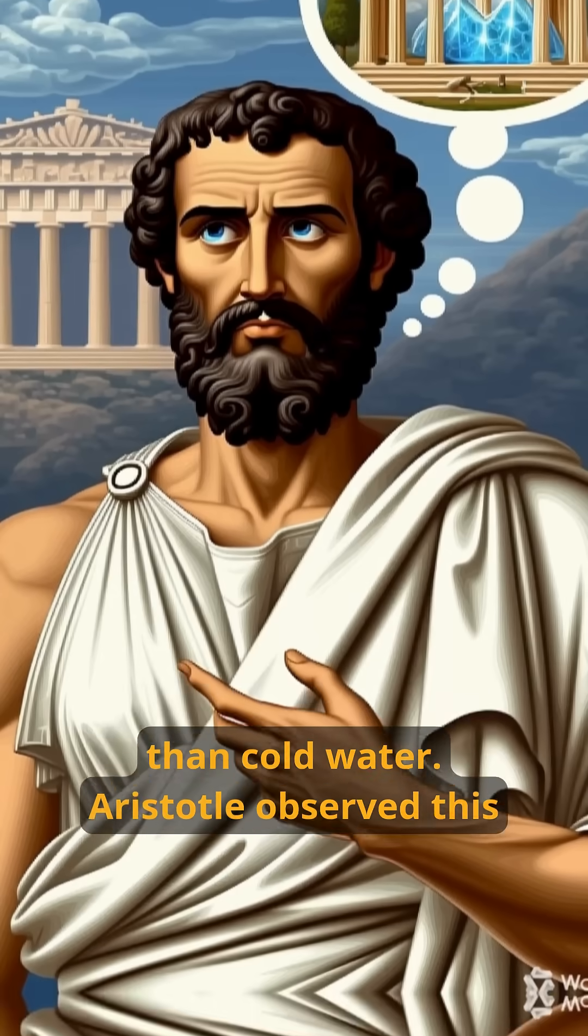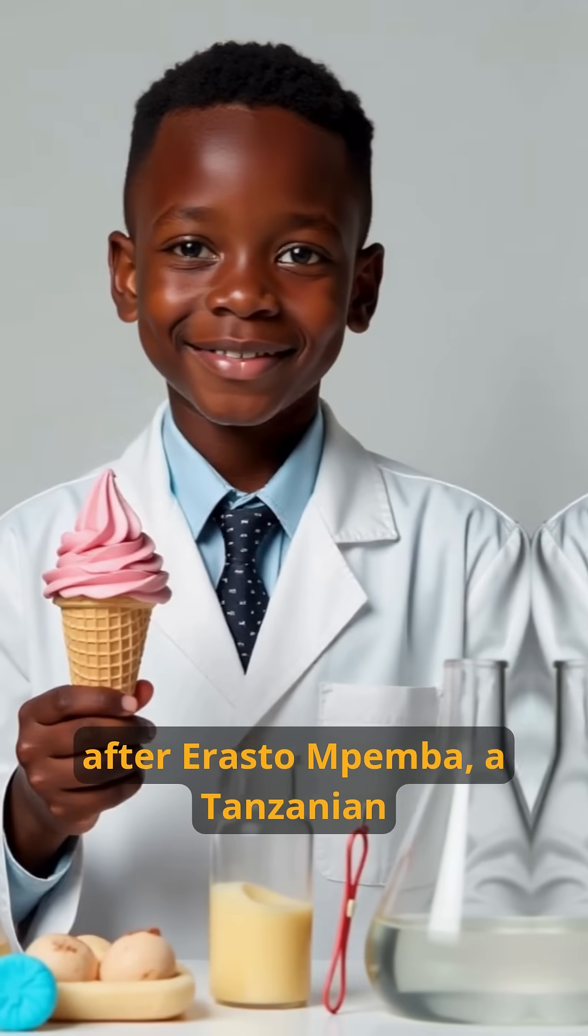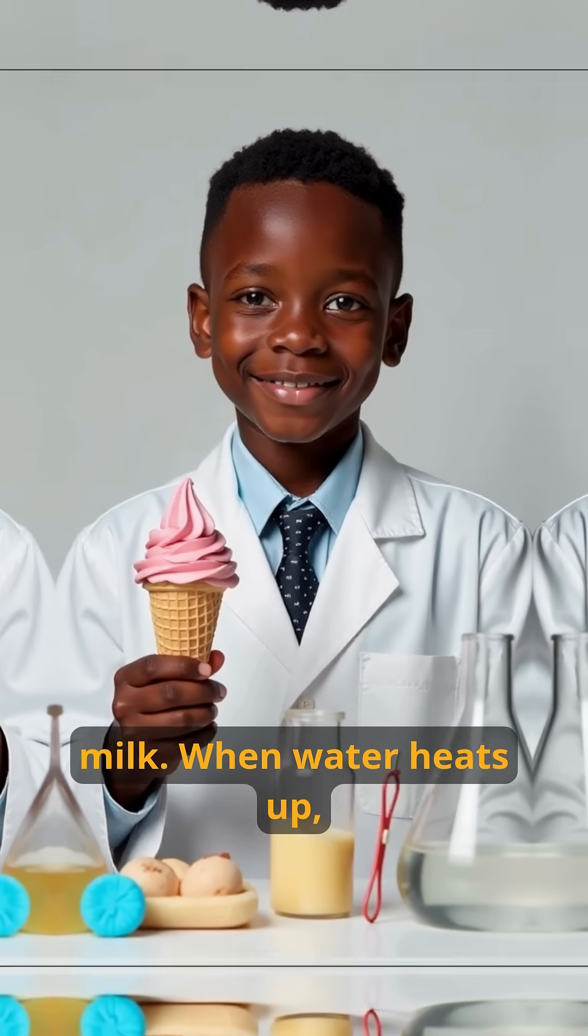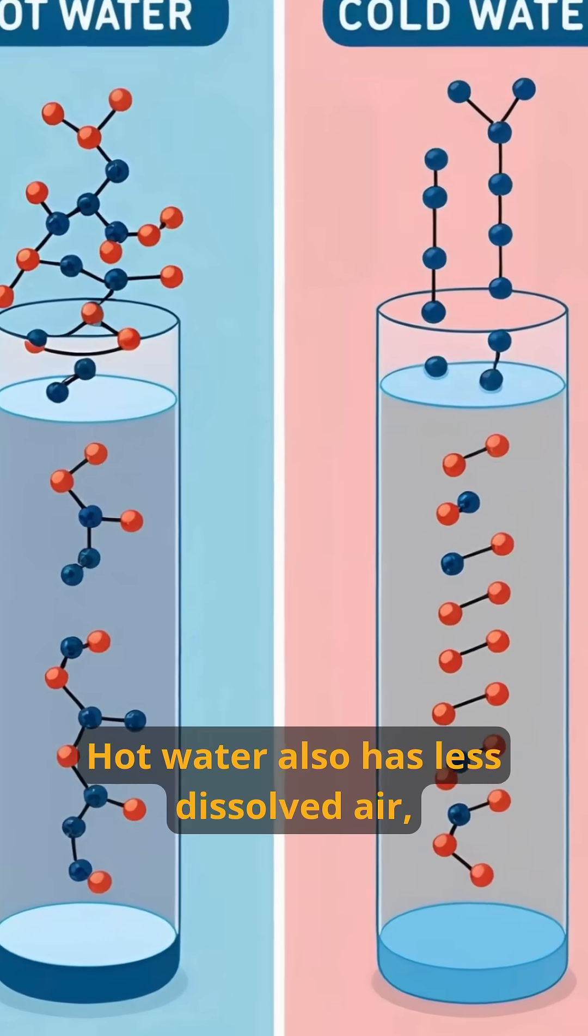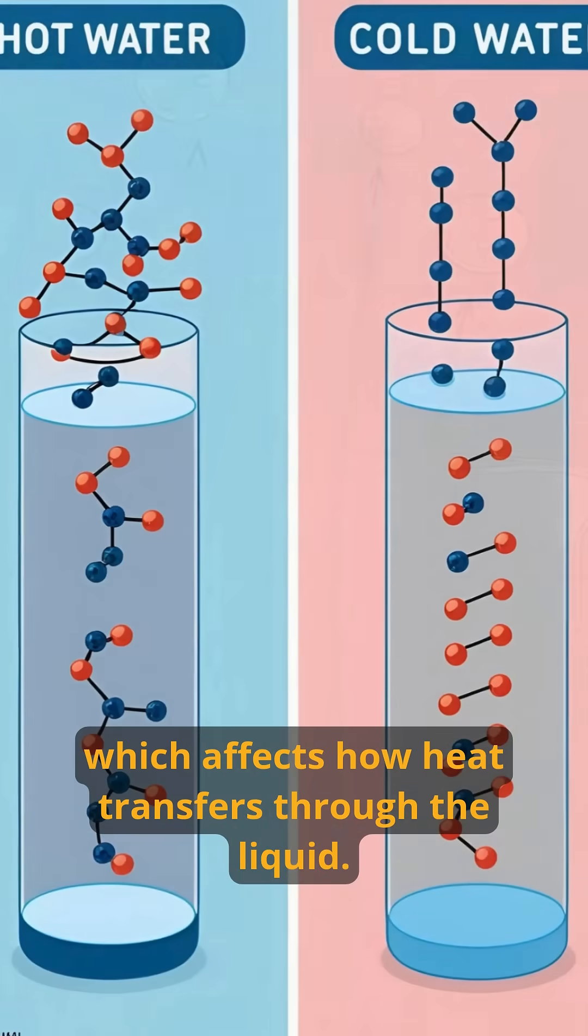Aristotle observed this phenomenon over 2,000 years ago, but it was named after Erasto Mpemba, a Tanzanian student who noticed ice cream froze faster when made with hot milk. When water heats up, dissolved gases escape, changing its composition. Hot water also has less dissolved air, which affects how heat transfers through the liquid.